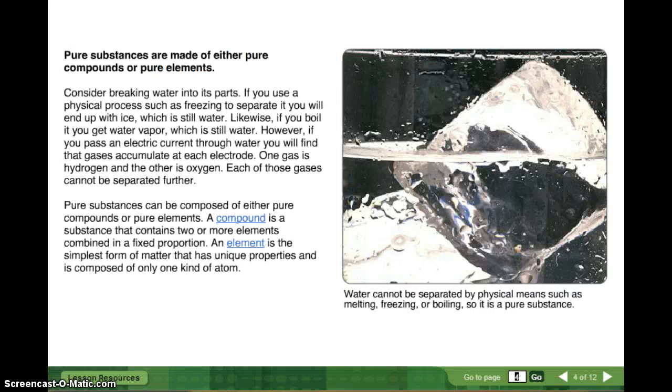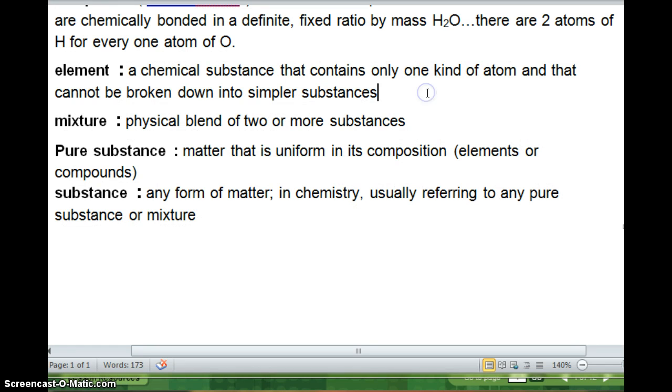Pure substances are made of either pure compounds or pure elements. Consider breaking water into its parts. If you use a physical process such as freezing to separate it, you will end up with ice, which is still water. Likewise, if you boil it, you will get water vapor, which is still water. It's still H2O. However, if you pass an electric current through water, you will find that gas accumulates at each electrode or each end of your electrical circuit. One gas is hydrogen and the other is oxygen. So you can use electricity to break apart H2O, break apart water, and end up with hydrogen gas and oxygen gas. Each of these gases cannot be separated further. So once you have hydrogen, that's it. It's an element. It's on the periodic table. Once you have oxygen, that's it. It's an element. Pure substances can be composed of either pure compounds or pure elements. A compound is a substance that contains two or more elements combined in a fixed proportion. An element is the simplest form of matter that has unique properties and is composed of only one type of element. And so let's add this: All elements are on the periodic table.